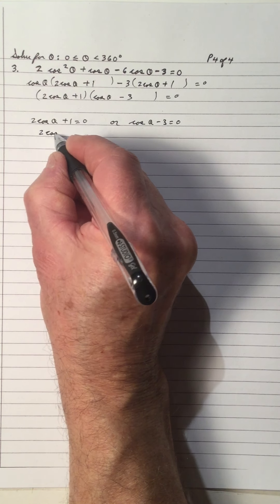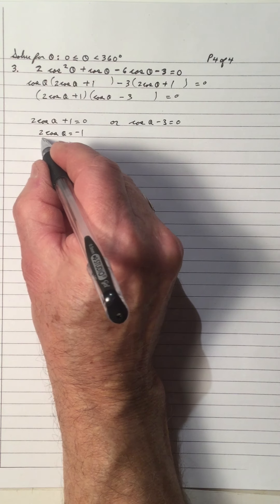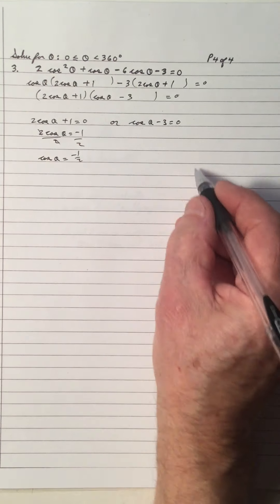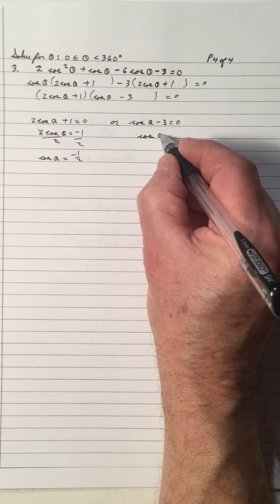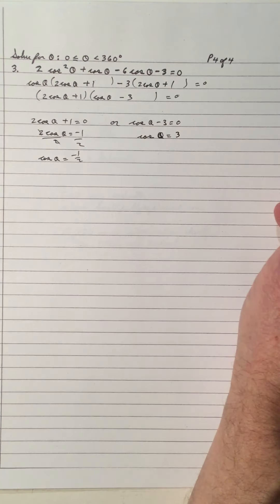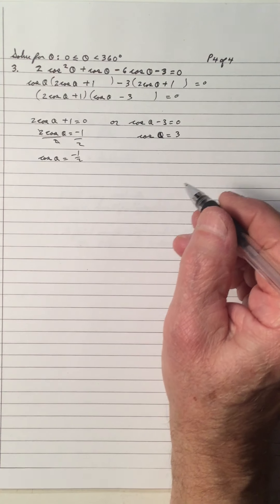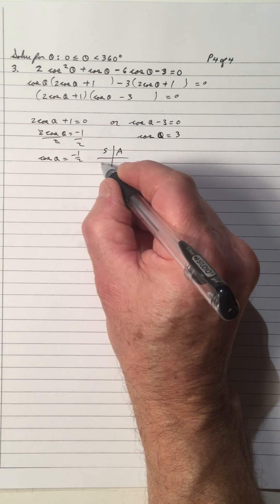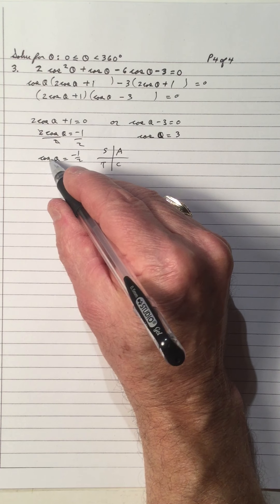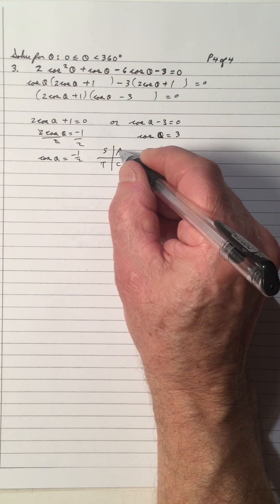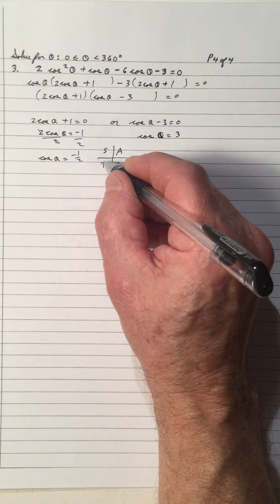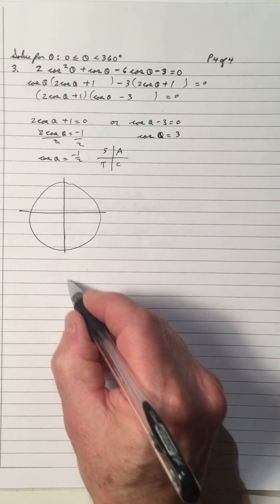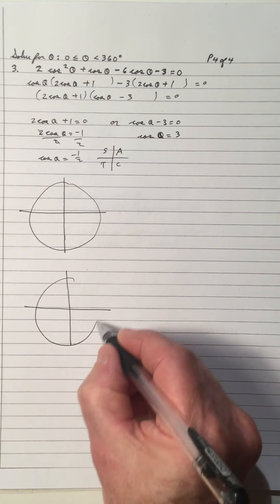Continuing to solve: two cos theta equals negative one, divide by two, so cos theta equals negative one half. Over here, cos theta equals three. Using 'add sugar to coffee,' cos is negative in quadrants two and three. Let's draw quadrant two and quadrant three.